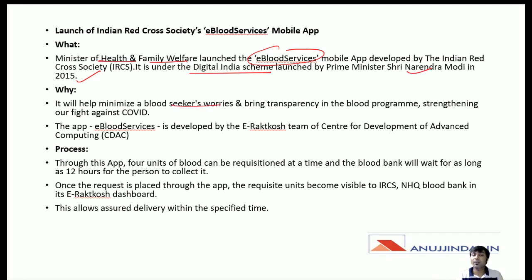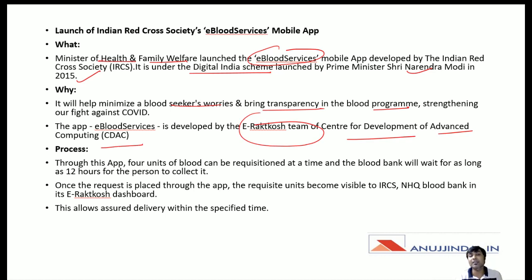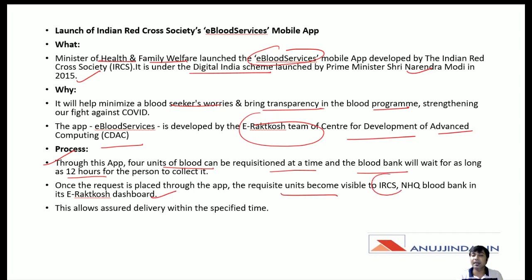This app will help minimize a blood seeker's worries and bring transparency in the blood program. It was developed by the e-Raktkosha team of the Centre for Development of Advanced Computing (CDAC). Through this app, four units of blood can be requisitioned at a time and the blood bank will wait for as long as 12 hours. Once the request is placed through the app, the requisite units become visible to IRCS in its e-Raktkosha dashboard.